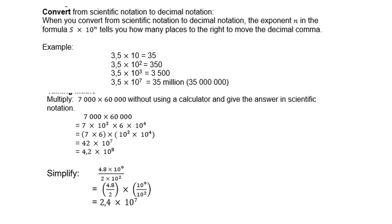Simplify: 4.8 times 10 to the power of 9 over 2 times 10 to the power of 2. You first divide 4.8 by 2, which gives 2.4. And then 10 to the power of 9 divided by 10 to the power of 2 is 10 to the power of 7. So the answer is 2.4 times 10 to the power of 7.